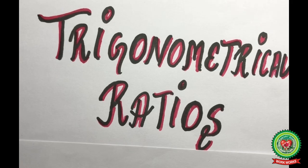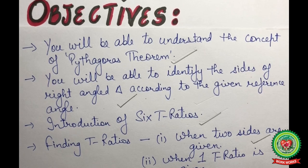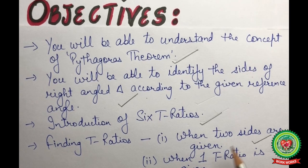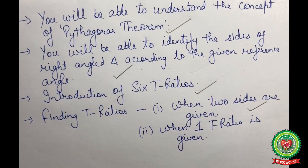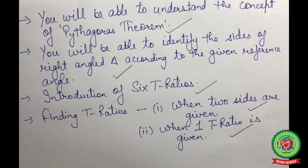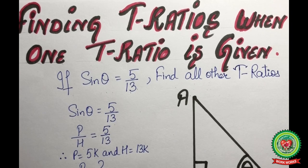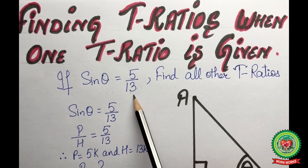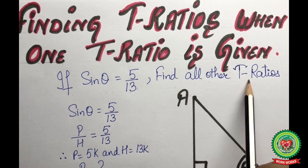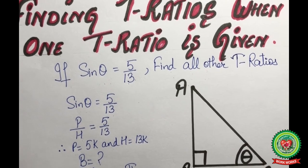Hello students, welcome back for another video on the topic trigonometrical ratios. In our previous video we discussed finding trig ratios when two sides are given. In this video we are going to discuss finding the trig ratios when one trig ratio is given to us. Let us discuss an example: if sine theta is equal to 5 upon 13, find all other trig ratios.